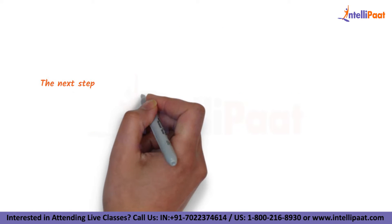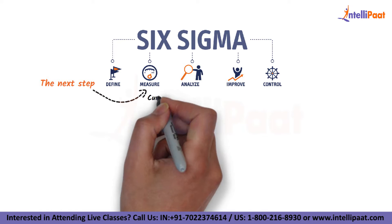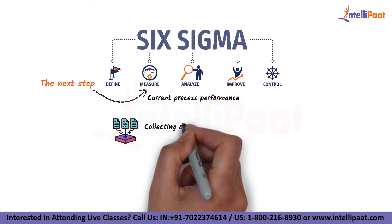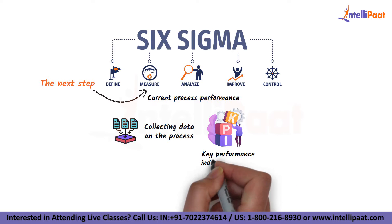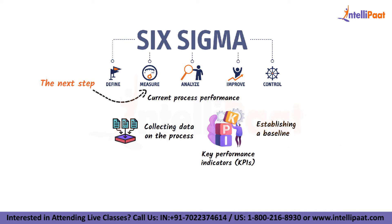The next step is to measure the current process performance. This involves collecting data on the process, identifying the key performance indicators (KPIs), and establishing a baseline for future improvement.